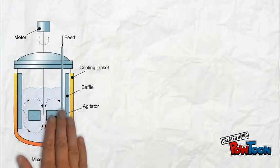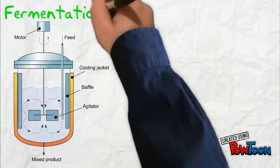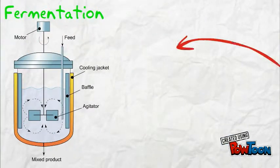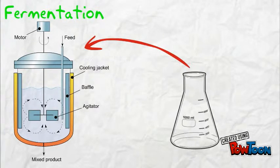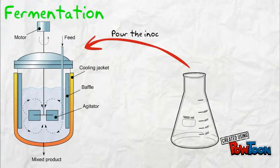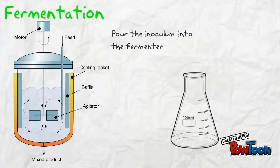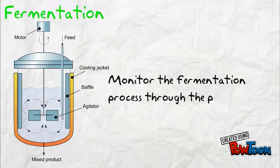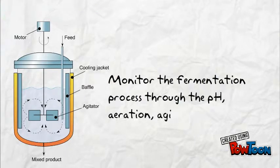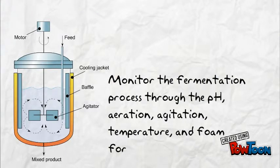Next is the fermentation process. Inside the bioreactor, there is a sterile medium — the same as the medium used for the inoculum. The prepared inoculum is poured into the bioreactor. The fermentation process is monitored through pH, aeration, agitation, temperature, and foam formation.